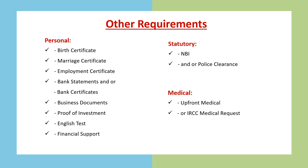Other requirements for a student permit include: personal birth certificate; marriage certificate if you are married; employment certificate if you are already working; bank certificate and or bank statement; business documents if you have an established business in your home country; proof of investment such as bonds or stocks; English test such as IELTS — and for Quebec, the French test or TEF; and proof of financial support. For statutory documents, you can secure an NBI clearance and police clearance if required. For the medical, it is better to do the upfront medical examination; otherwise you have to wait for the IRCC medical request.